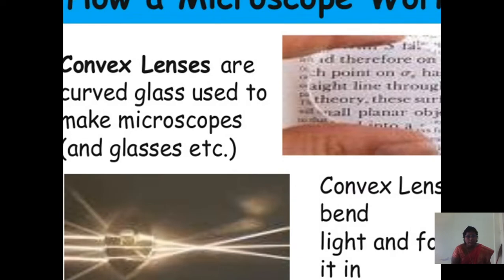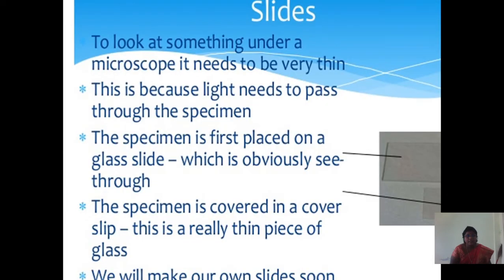Convex lenses or curved glass are used to make microscopes. Convex lenses bend the light and focus it. To look at something under a microscope, it needs to be very thin because light needs to pass through the specimen.